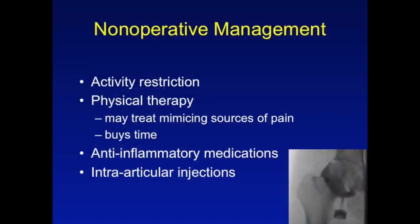As in most conditions in orthopedic surgery, we always start with non-operative management. Like most other repetitive use injuries, activity restriction is a mainstay of care. We can also try physical therapy, which may treat mimicking sources of pain such as iliopsoas bursitis, and buys time for the patient to rest and recover. Symptomatic treatment with non-steroidal anti-inflammatory medications such as ibuprofen or naproxen can be useful. In the absence of response to these, an intra-articular injection of corticosteroid may prove beneficial, and in addition to being therapeutic, it may help in the diagnosis when a local anesthetic is added to determine whether the source of pain is truly intra-articular, as expected in a femoroacetabular impingement scenario.